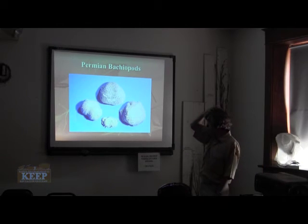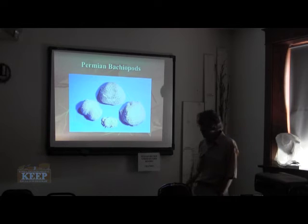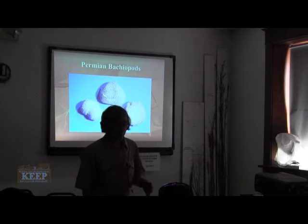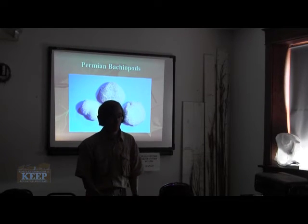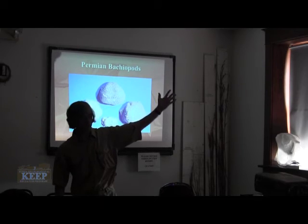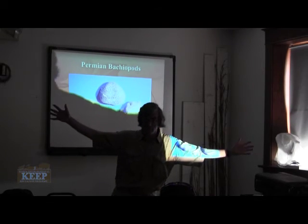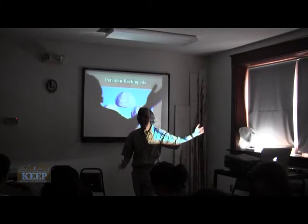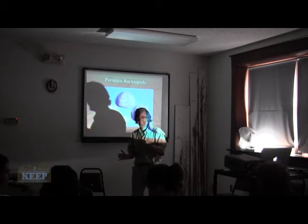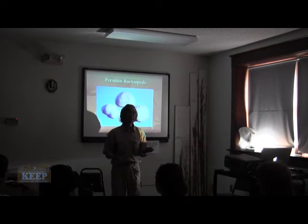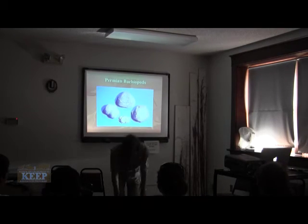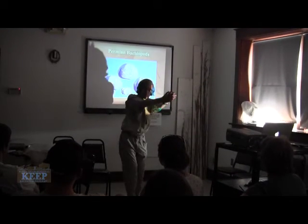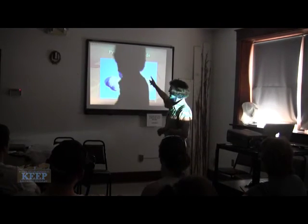The way I refer to it is: if you're a clam — a bivalve — your symmetry runs this way around your body, so you have one valve on this side and another valve on the other side, and your symmetry goes this way. If you're a brachiopod, your symmetry runs the other way. So this is a brachiopod, and this is a clam. If you remember that, you get the symmetry right.